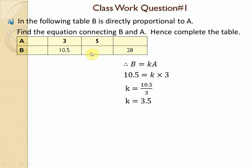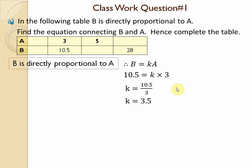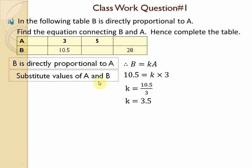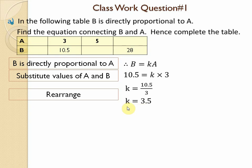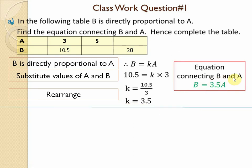We calculate the value of b using a = 5, and the value of a using b = 28. Since b is directly proportional to a, b = k × a. Substituting the values a = 3 and b = 10.5 from the table, we calculate the value of k. The rearranged equation connecting b and a becomes b = 3.5a.